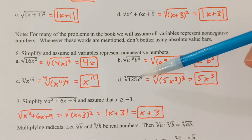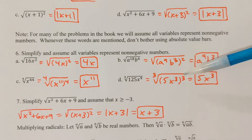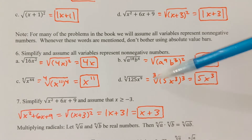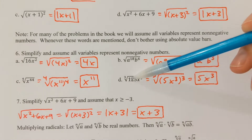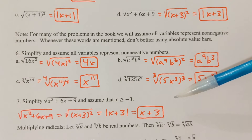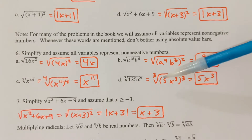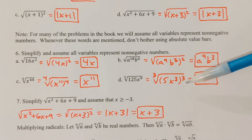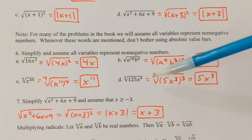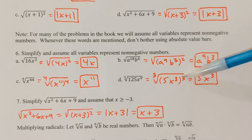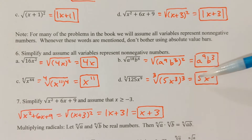How about the cube root of 125x to the 9th? I'd want to rewrite that as the cube root of something cubed. 5 cubed gives me 125, and x cubed cubed gives me x to the 9th. So 5x cubed cubed gives me 125x to the 9th. Since the index of 3 and the power of 3 are the same, those go away, leaving me with 5x cubed as the answer.